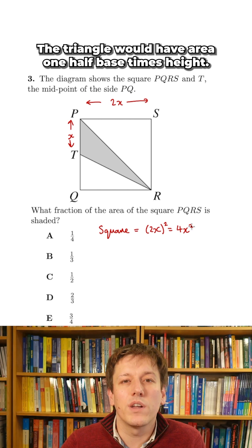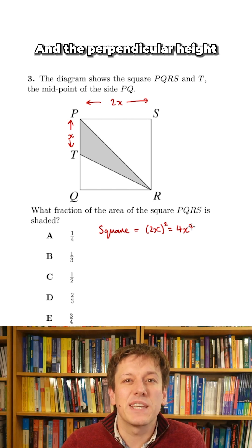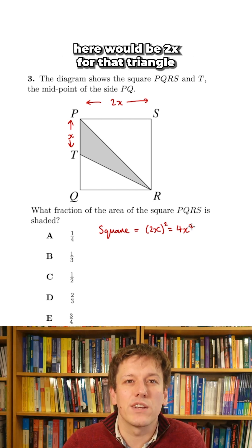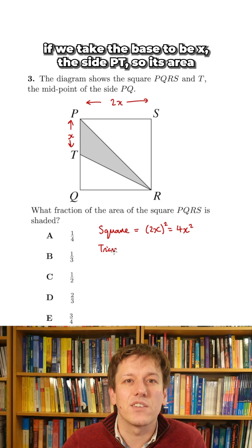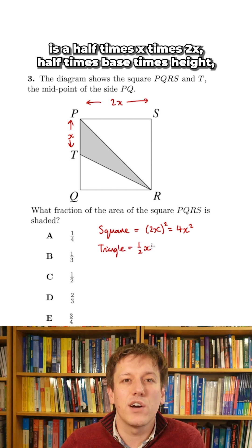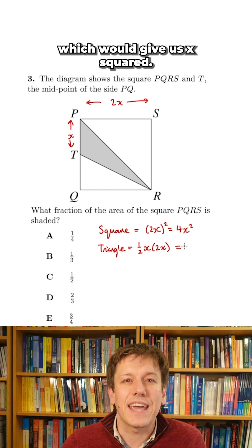The triangle would have area one-half base times height, and the perpendicular height here would be 2x for that triangle if we take the base to be x, the side PT. So its area is a half times x times 2x, half times base times height, which would give us x squared.